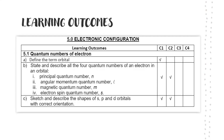Learning outcome. At the end of the lesson, you should be able to define what is orbital. And we are going to learn about the four quantum numbers, which is N, L, M, and S.